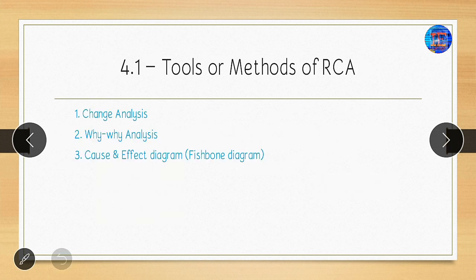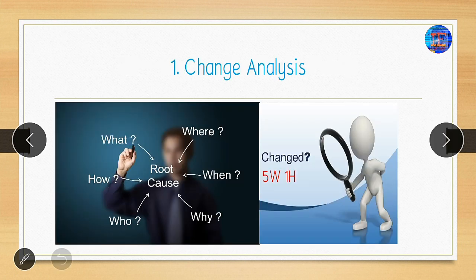There are three major tools or methods of root cause analysis. The first is change analysis, the second is 5-Why analysis, and the third is cause-and-effect or fishbone diagram. Starting with change analysis: we analyze what change happened, where it happened, when it happened, who did it, and how it happened.